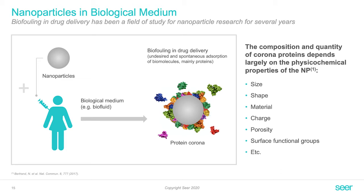This was long thought to be a detrimental effect, because when you introduce, for example in medicine, a nanoparticle into the circulation, this protein assembly is very complex. The protein corona, as we call it, is changing the properties of the particle. It's here we use magnetic nanoparticles and leverage the effect that they form these protein coronas.